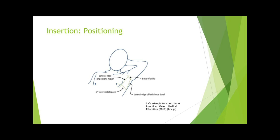In order to insert a chest tube, the patient should be positioned in a supine or semi-recumbent position. The patient's ipsilateral arm should be abducted and the elbow flexed in order to position the hand behind or above the patient's head. Alternatively, the arm can be left abducted at the side of the patient. It is often helpful to place a pillow or shoulder roll under the chest to elevate the involved side.